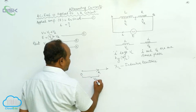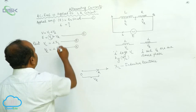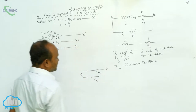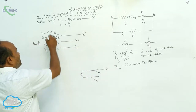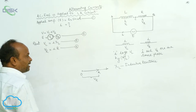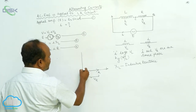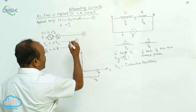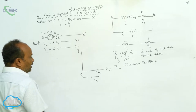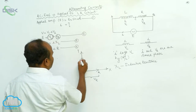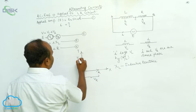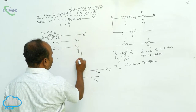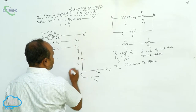Let us consider this is called VR. Whatever the voltage VR is taken along the x-axis. Whatever the voltage around the inductor is taken on the y-axis. This is the x-axis and this is the y-axis. Voltage VL is taken on the y-axis, represented by point B.